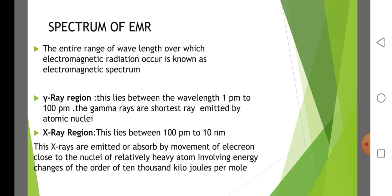X-ray region. X-rays lie in between 100 picometer to 10 nanometer. These X-rays are emitted or absorbed by movement of electrons close to the nuclei of relatively heavy atoms, involving energy changes of the order of 10,000 kilojoules per mole.